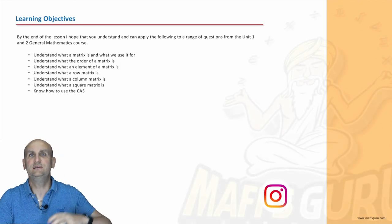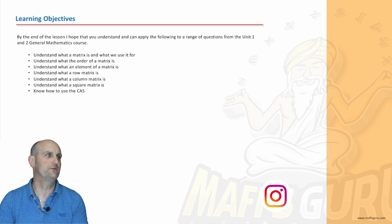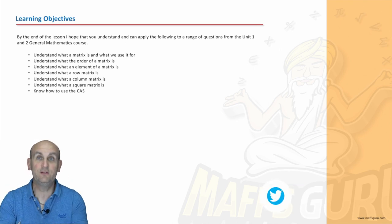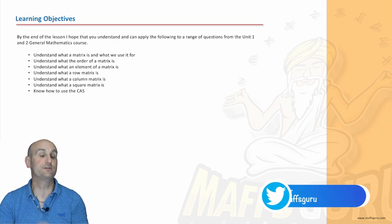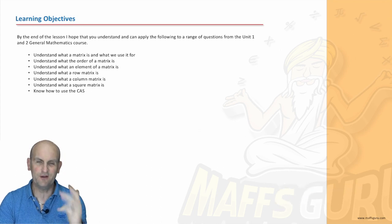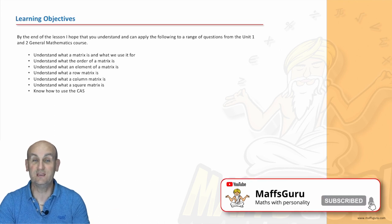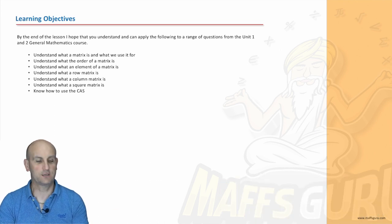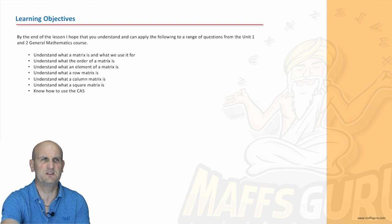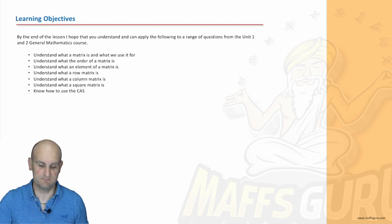What are we looking at today? Well, this is the start of a new topic in the General Maths course. You're going to go, General Maths? I'm not doing General Maths, don't worry about it. Matrices. If you need to know about matrices, these videos are going to solve that for you because I'm going to look at what a matrix is, the order, what the elements are, rows, columns, square matrices and of course, all important, know how to use your CAS. What's a CAS? It's a computer-assisted software calculator. I don't actually know, it's a calculator. Leave it at that and let's just move on.